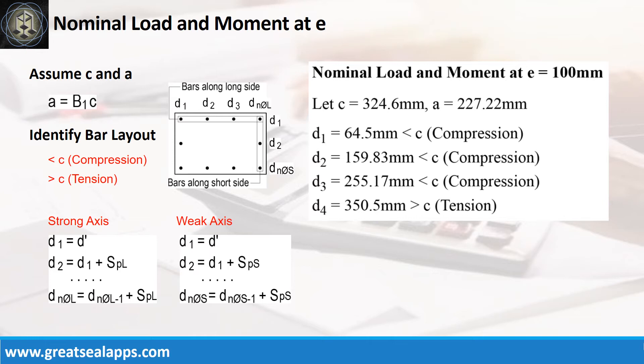D sub 1 equals 64.5 mm, less than neutral axis, compression. D sub 2 equals 159.83 mm, less than neutral axis, compression. D sub 3 equals 255.17 mm, less than neutral axis, compression. D sub 4 equals 350.5 mm, greater than neutral axis, tension.